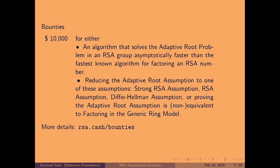A couple of months ago we started a bounty program on this. There's now a $10,000 bounty for either finding an algorithm that solves the adaptive root problem in an RSA group faster than the fastest known algorithm for factoring — which would be GNFS, so it has to be asymptotically faster — or, alternatively, if you can reduce the adaptive root assumption to the strong RSA assumption, RSA assumption, Diffie-Hellman assumption, or prove that the adaptive root assumption is non-equivalent to factoring in the generic ring model.